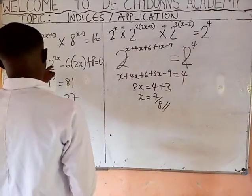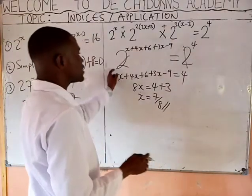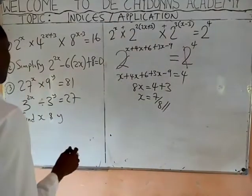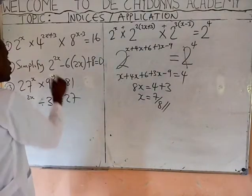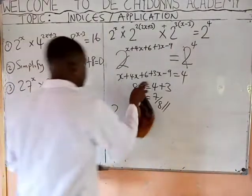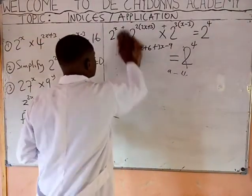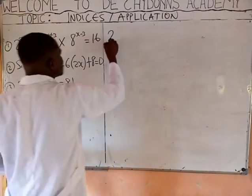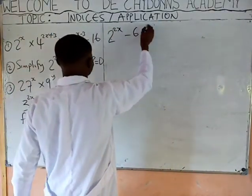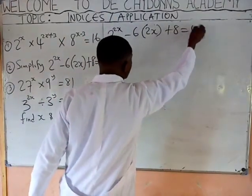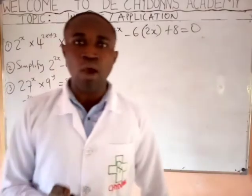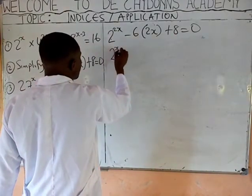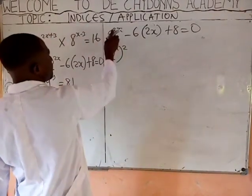Then we are asked to simplify this next expression. We have 2 raised to the power of 2X minus C, bracket 2 raised to the power of 2X plus 8 equals 0. This is the application of indices in quadratic equations. This simply means 2 raised to the power of X, raised to the power of 2, from the product power law.